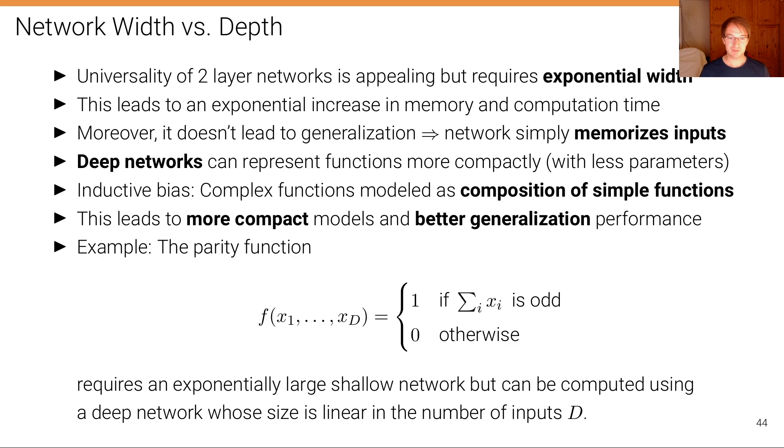So there's also a simple binary example here, this parity function that I show here. It's a function of x1 to xd which outputs one if the sum of these x's is odd and a zero if it's even. So this function, you can show that it requires an exponentially large shallow network in the number of inputs d, but it can be computed using a deep network whose size is just linear in the number of inputs. So it contrasts these two extremes very well.